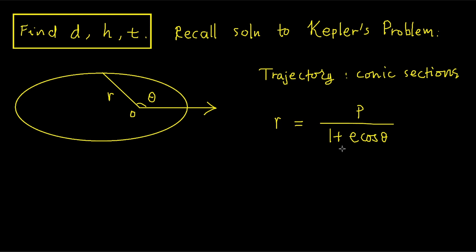Here p and e are parameters of the trajectory. p has the dimension of length, and e is dimensionless, called the eccentricity. When e = 0, the trajectory is a circle. When 0 < e < 1, it is an ellipse. When e = 1, it is a parabola. When e > 1, we have a hyperbola.